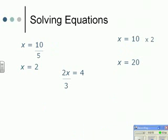This one is slightly different — we've got 2x divided by 3 equals 4. First I remove the divided by 3 by multiplying both sides by 3, so 2x equals 4 times 3, which means 2x equals 12. I don't want 2x, I want x itself, so I halve both sides: 2x becomes x and 12 becomes 6, giving x equals 6.